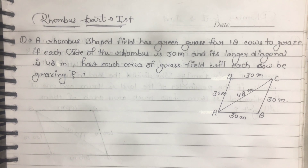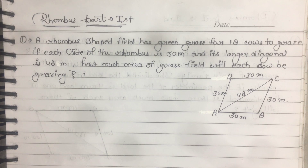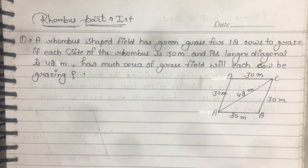Good evening bacho, aapka swagat hai online classes by Raja Sir. A rhombus-shaped field has green grass for 18 cows to graze. If each side of the rhombus is 30 meters and its longer diagonal is 48 meters, how much area of the grass field will each cow be grazing?